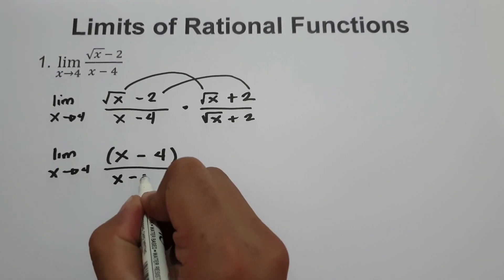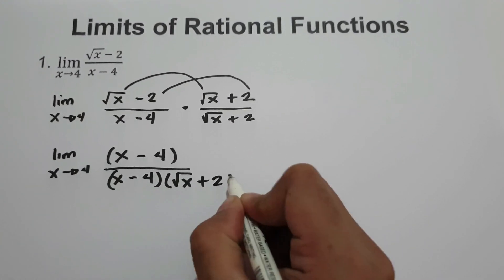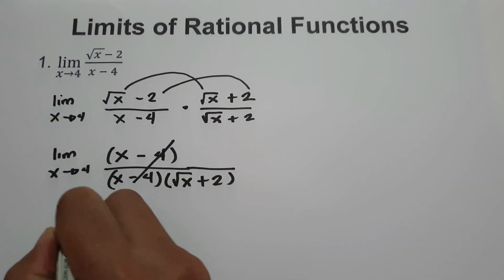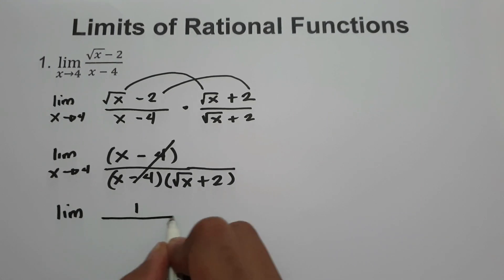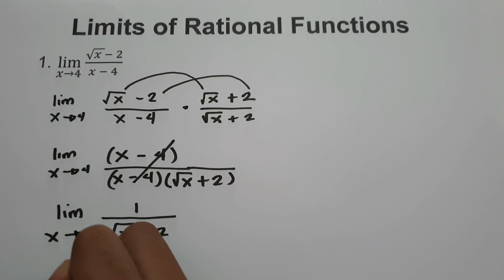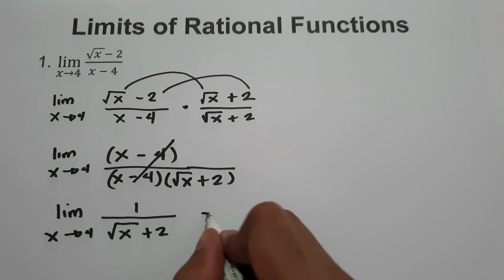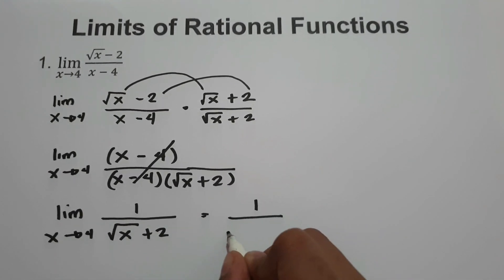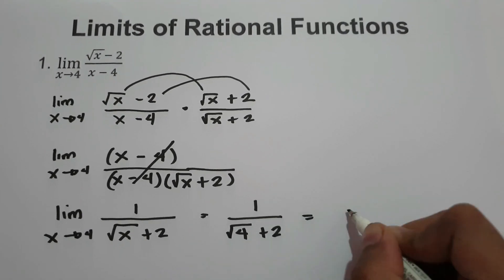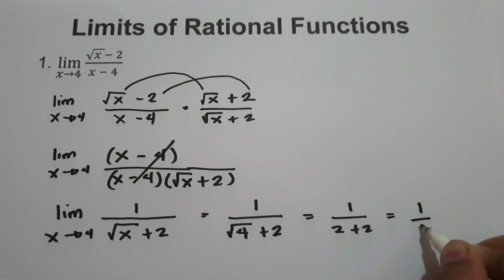Then let's write x minus 4 multiplied by square root of x plus 2. So we can cancel x minus 4, and we have the limit of 1 over square root of x plus 2 as x approaches 4. So this time, we can substitute directly the value of x. We have 1 over square root of 4 plus 2, and the square root of 4 is 2 plus 2. Our answer is 1 over 4.